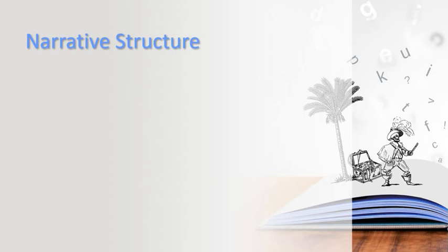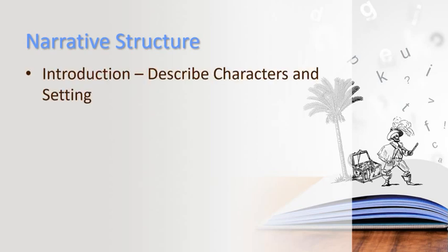In very simple terms, a narrative can be broken up into three main parts. An introduction where you introduce the main characters and the setting. So who is in the story and where and when is the story taking place?